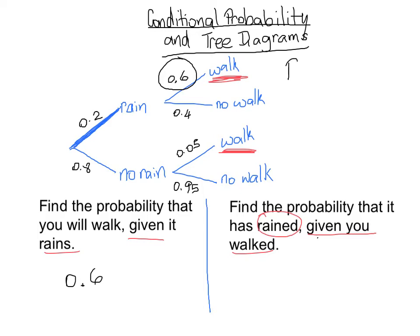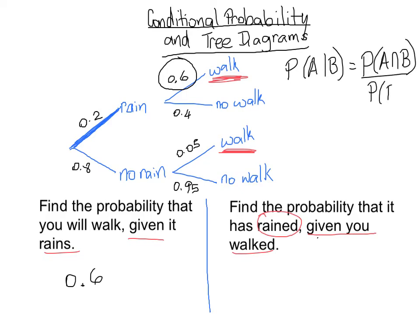The formula for that is given in your formula sheet. The probability of A given B is equal to the probability of A and B over the probability of B. That line in the middle means 'given,' so the whole phrase means the probability of A given B. As you may recall from our last unit, that symbol means 'and.'